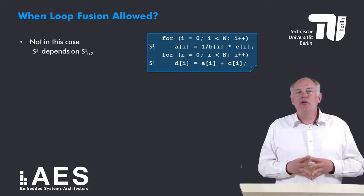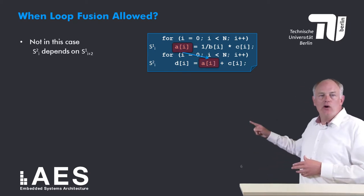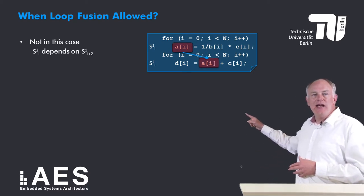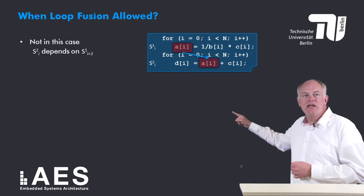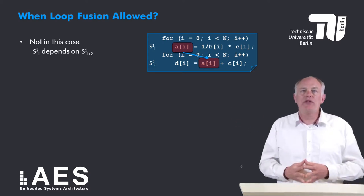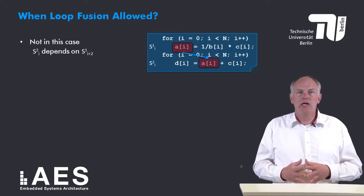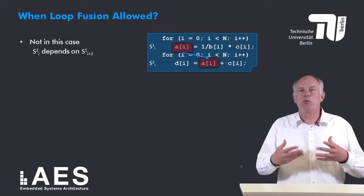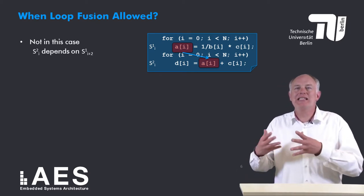Loop fusion is not allowed in this case, however. In this code, iteration i of the second loop depends on iteration i+2 of the first loop. So there is a dependence from S1[i] to S2[j] where j is less than i.